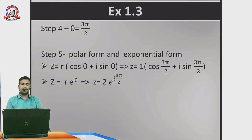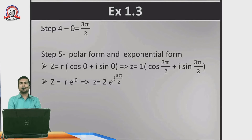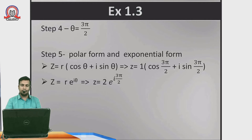Therefore, the polar form of z = −i is z = 1·(cos(3π/2) + i sin(3π/2)), and the exponential form is z = e^(i·3π/2). Since x = 0, the real part is zero and drops out.